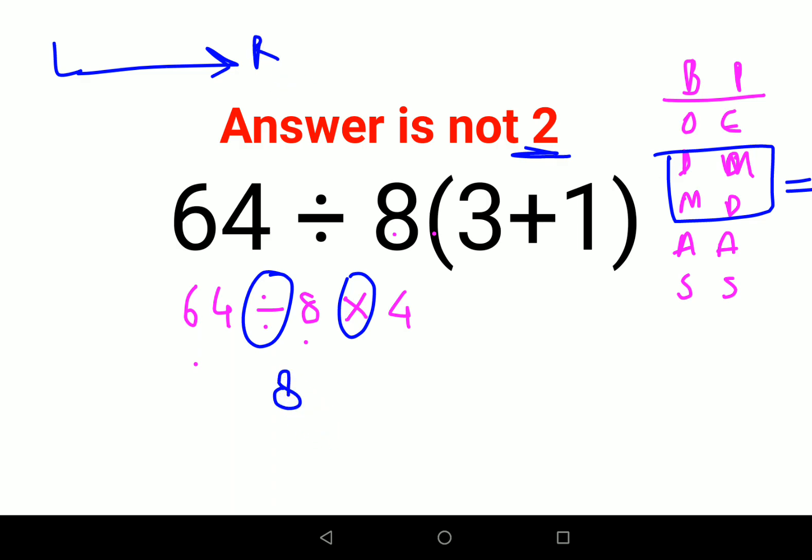So 64 divided by 8 is 8, 8 into 4, answer comes out to be 32.